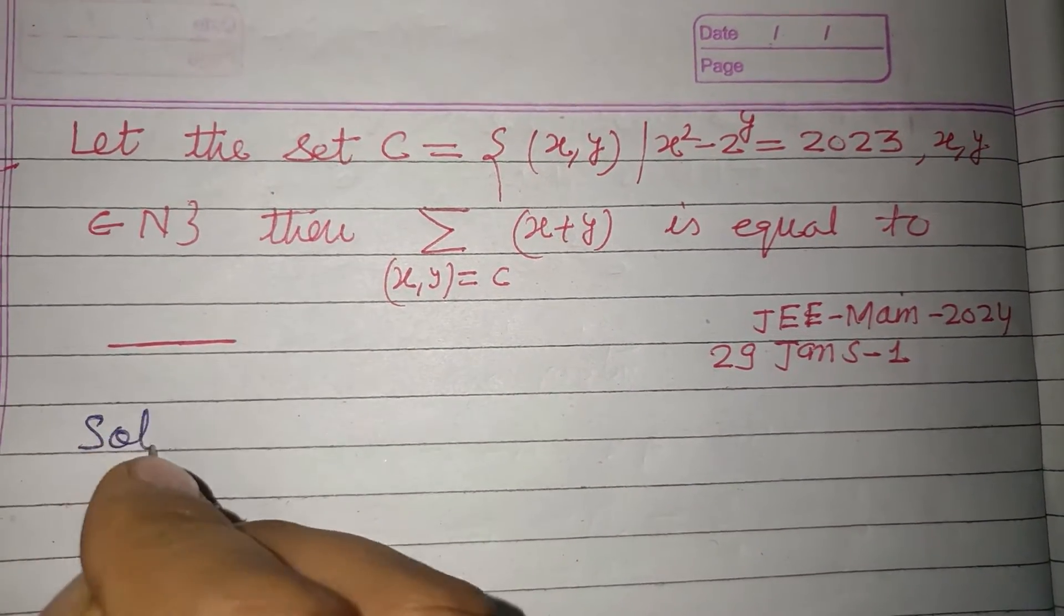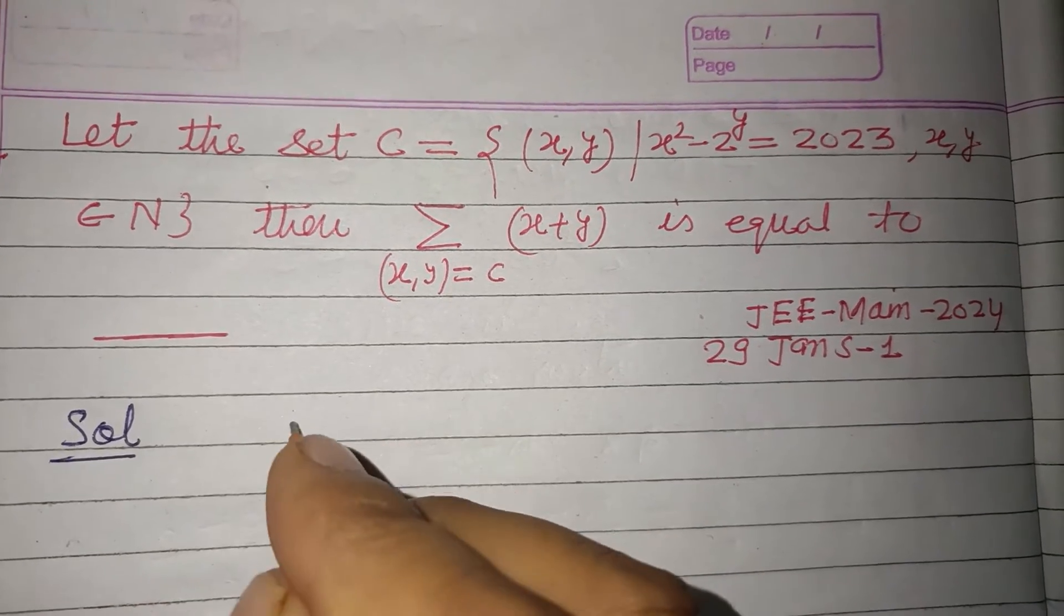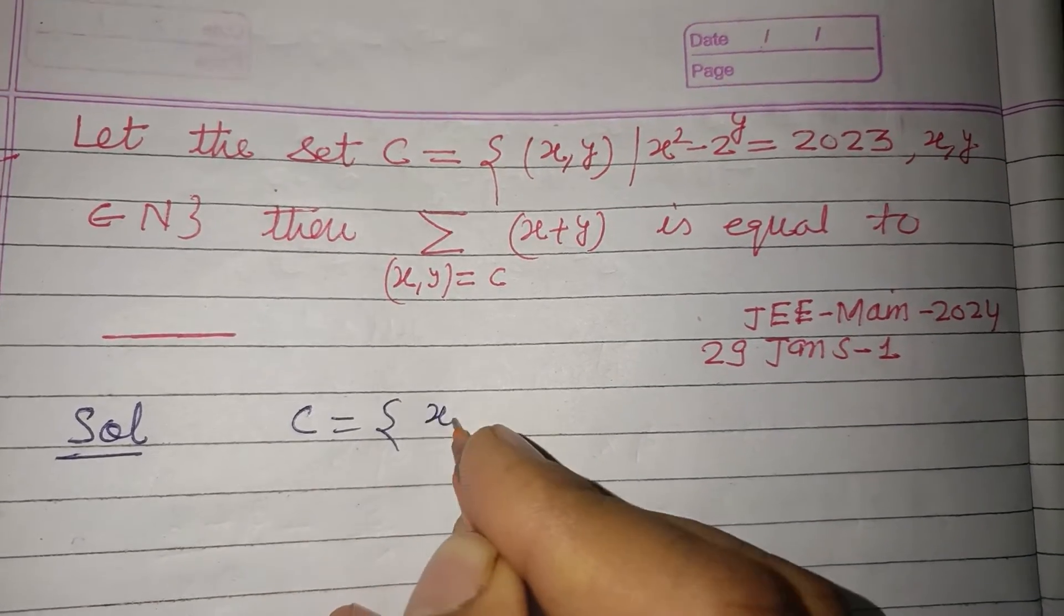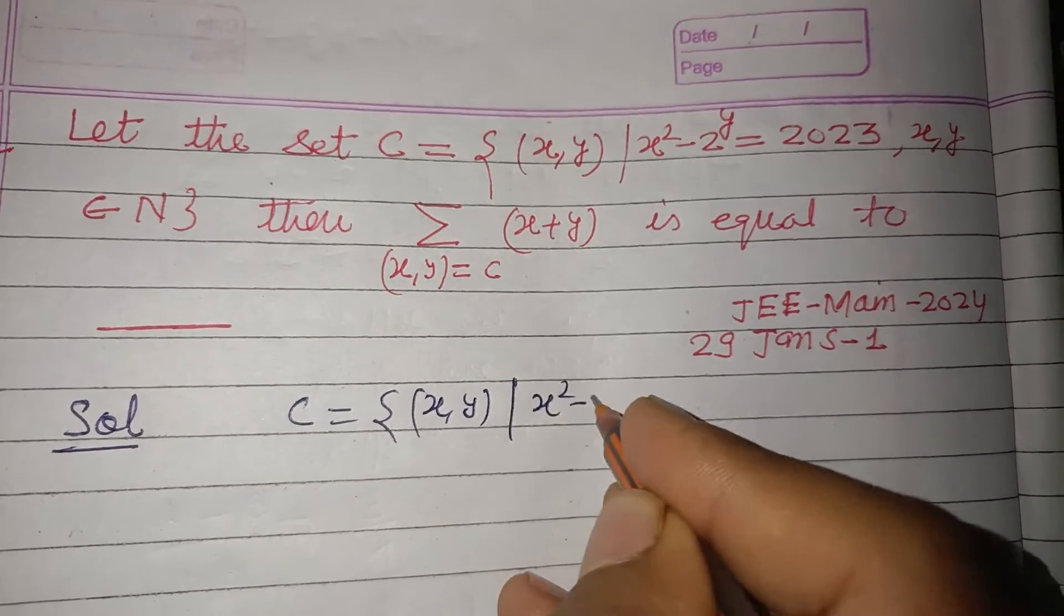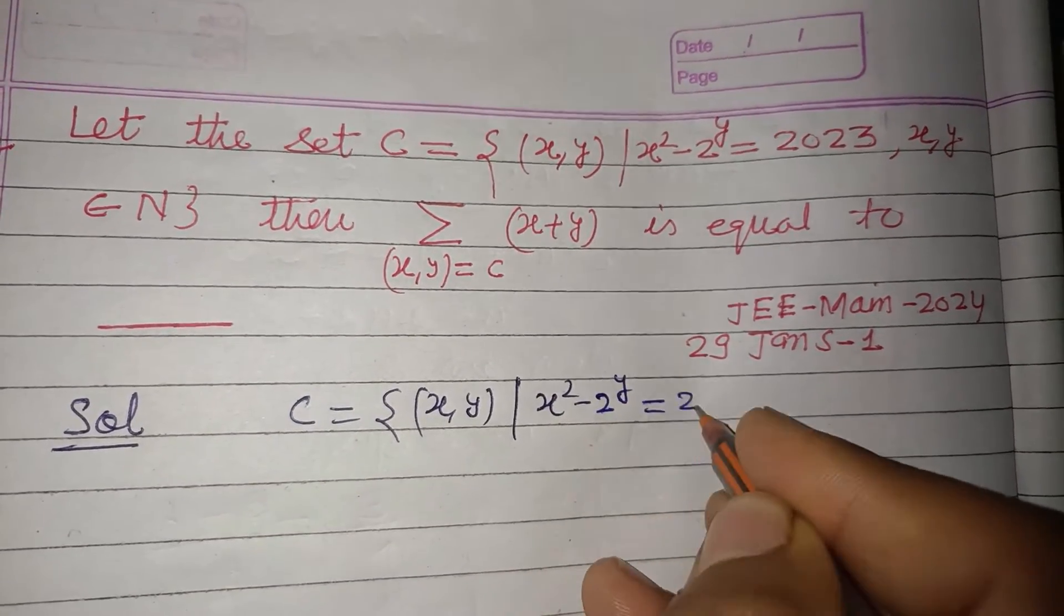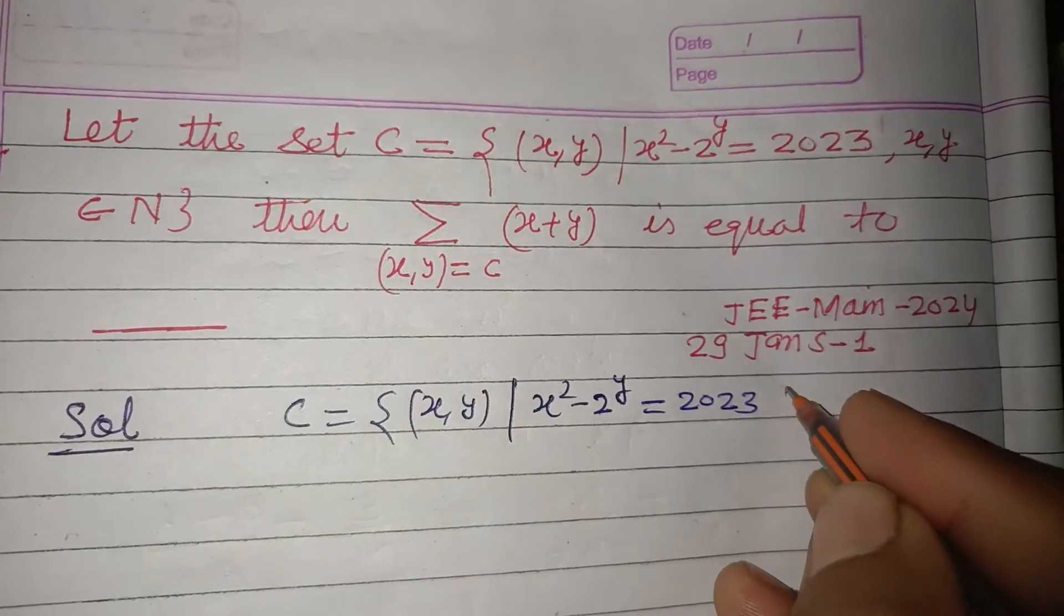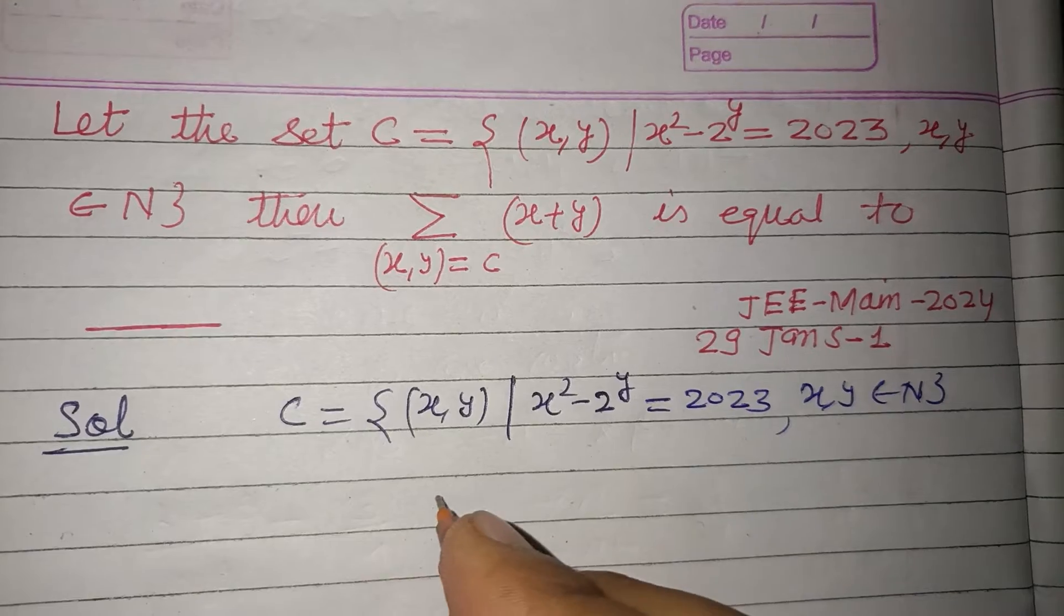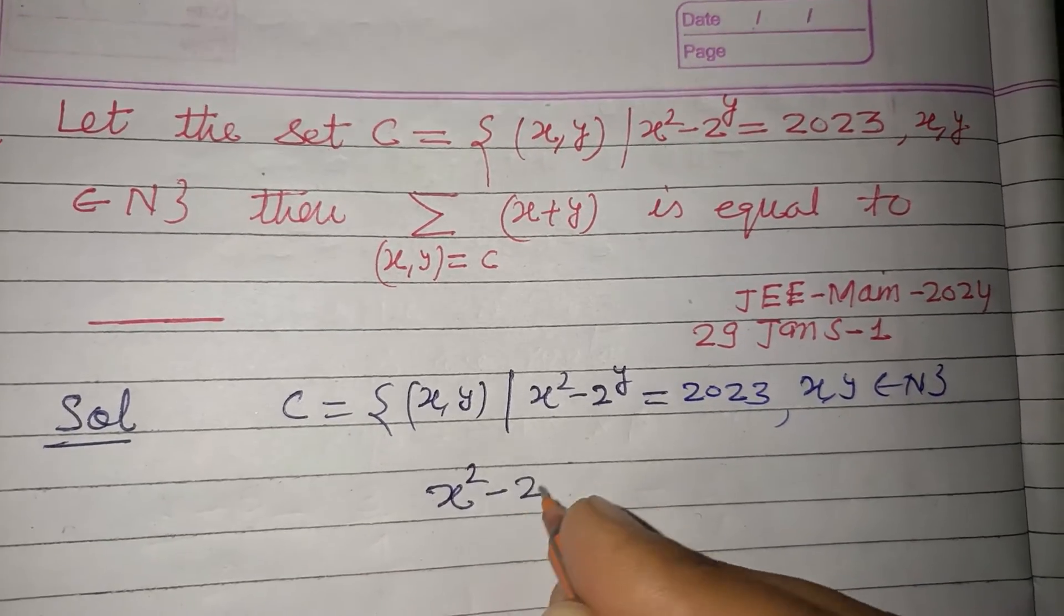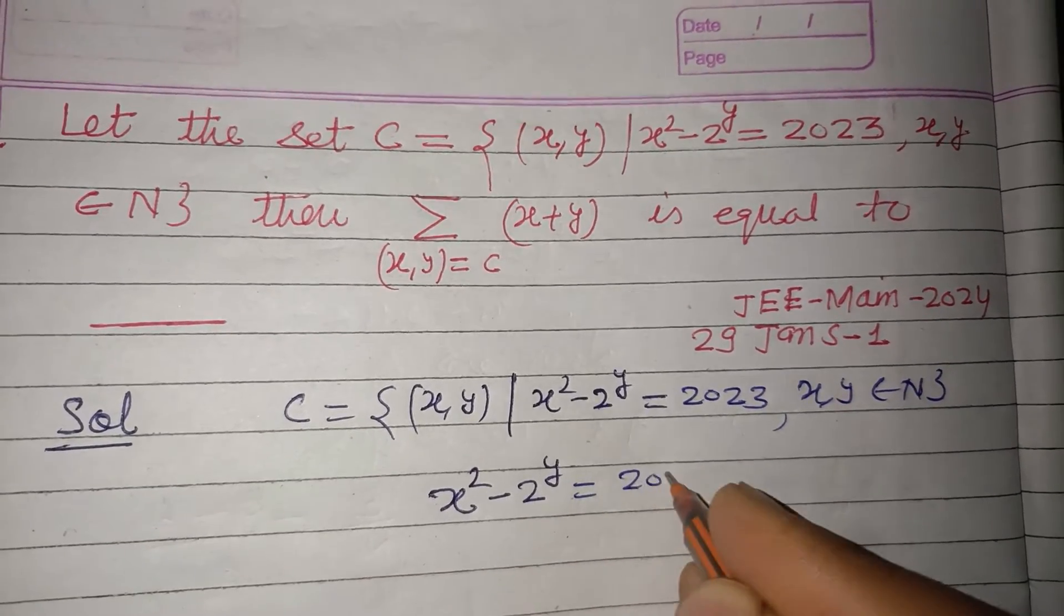So students, here we have the set given to us. x, y are the solutions where x² - 2^y = 2023, where x, y belongs to N. From here, x² - 2^y = 2023.